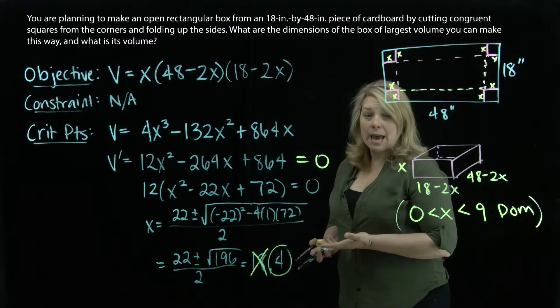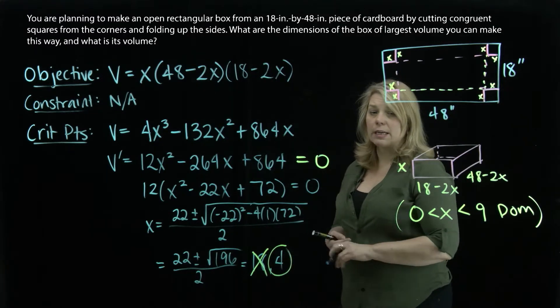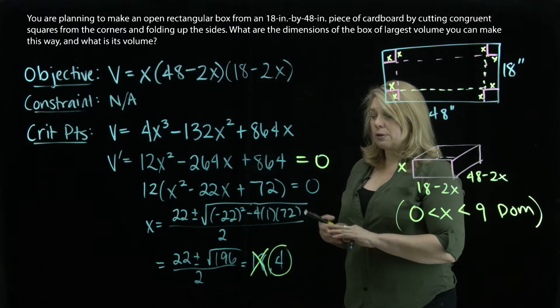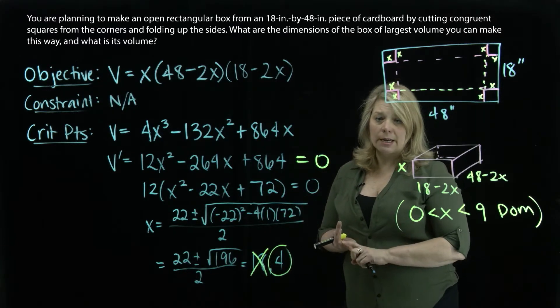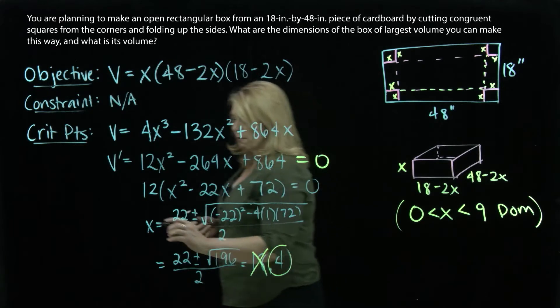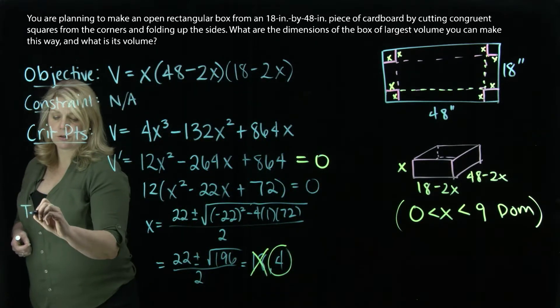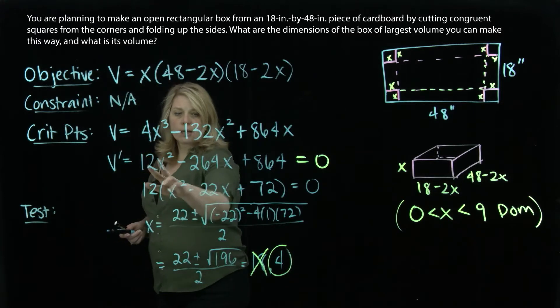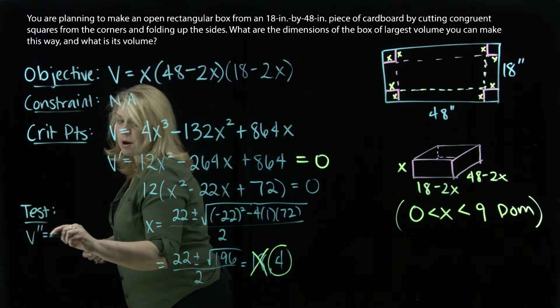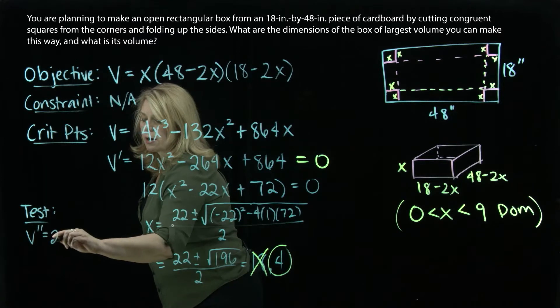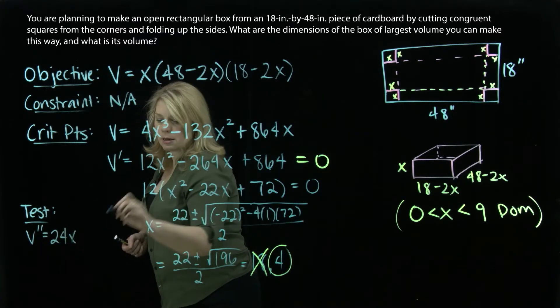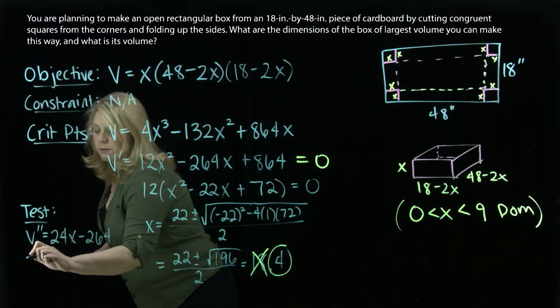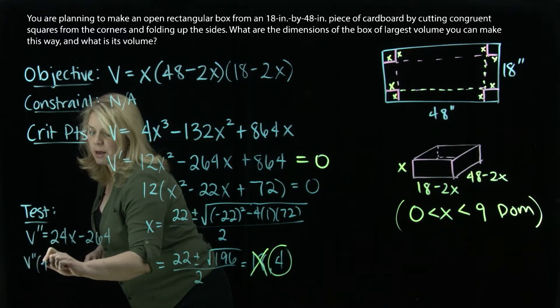I need to test to determine whether that x value actually gives me a local minimum or a local maximum. I can use either first derivative test or a second derivative test to do that. I'm just going to look at a second derivative test really quick. I'm running out of space. I'm going to use the second derivative, v double prime. So I'll have 24x minus 264. I want to evaluate that at x equals 4. So v double prime of 4.